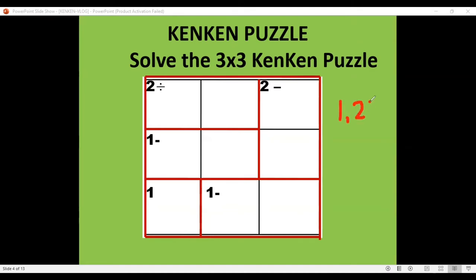Now we can see here some cages. When you have a cage like this one — for instance, you have 2 and then division — this tells us that the numbers in this cage must give us a quotient of 2. Since 1 and 2 are possible numbers you could divide to get an answer of 2, the numbers you can write in these two boxes are 1 and 2.